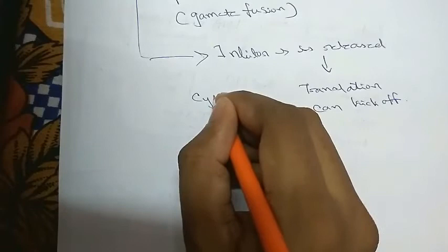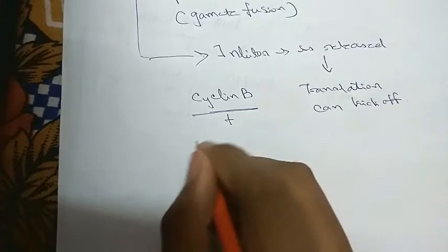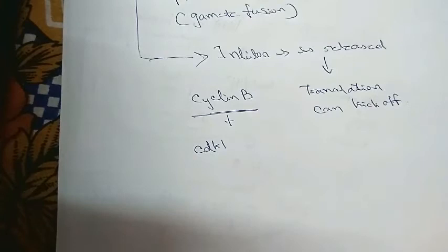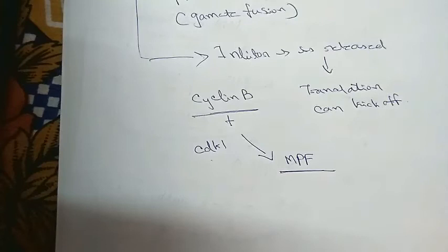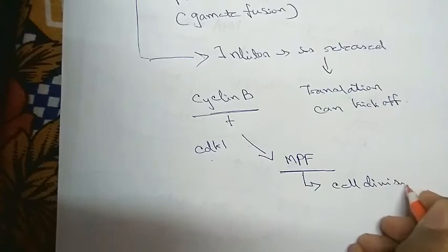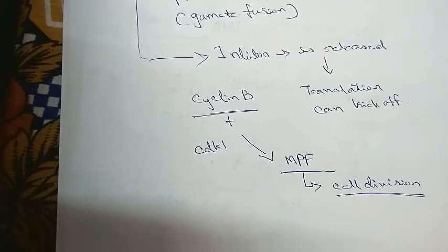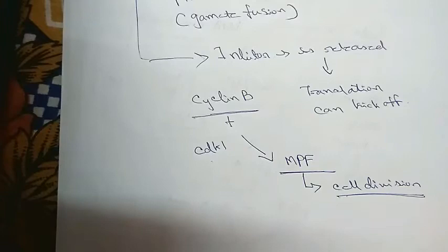One of these mRNAs codes for cyclin B. Cyclin B associates with CDK1 to form a protein known as MPF — mitosis promoting factor — and this promotes cell division. So in the late response, with the help of an increase in pH levels, protein levels go up and cell division kicks off.